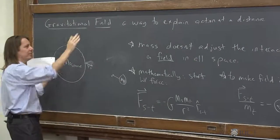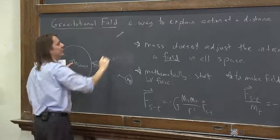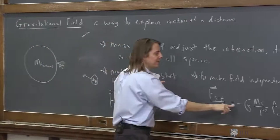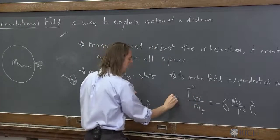If we put this at the origin of a coordinate system, R hat can be wherever you are, R hat points out. And then the field points in because of that negative. So this is the field, and we actually give it its own letter. It's a little g.